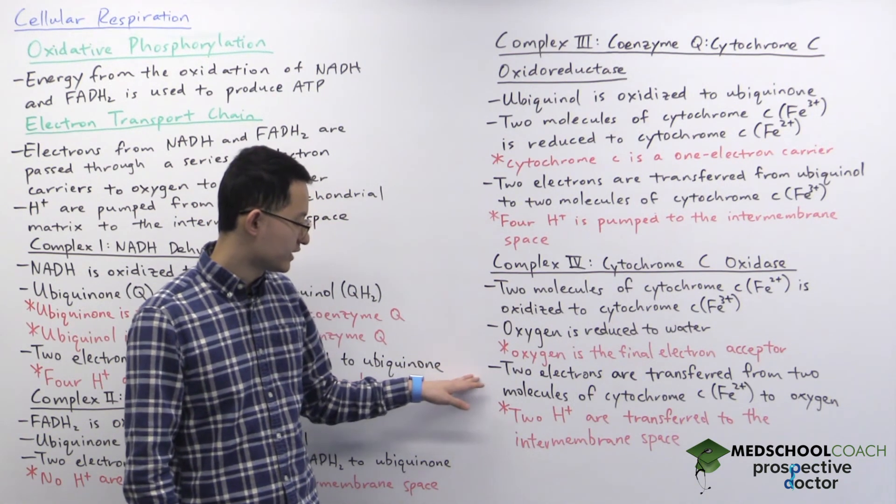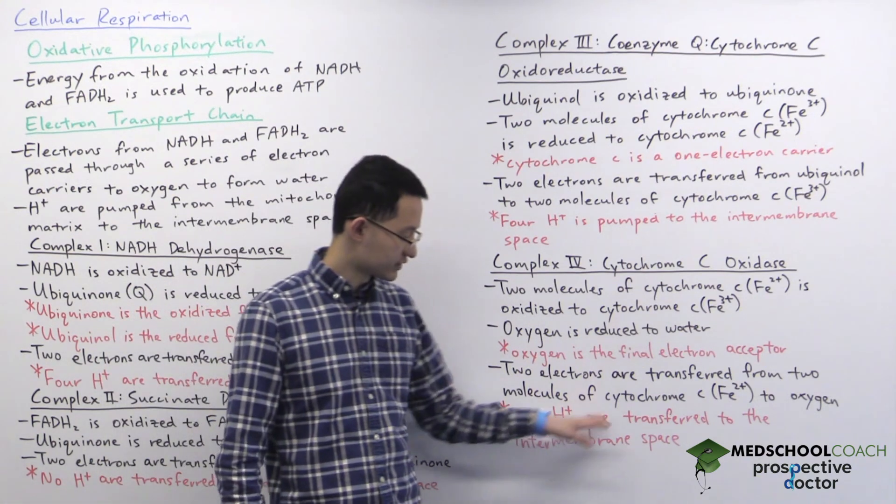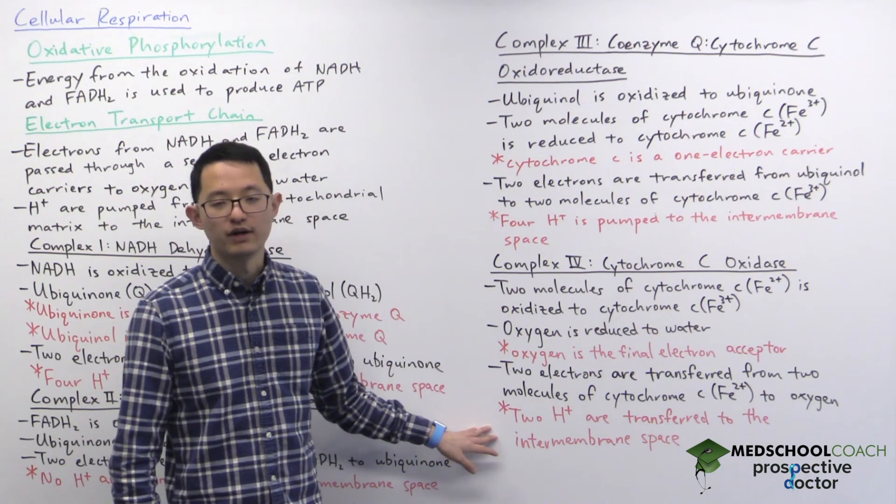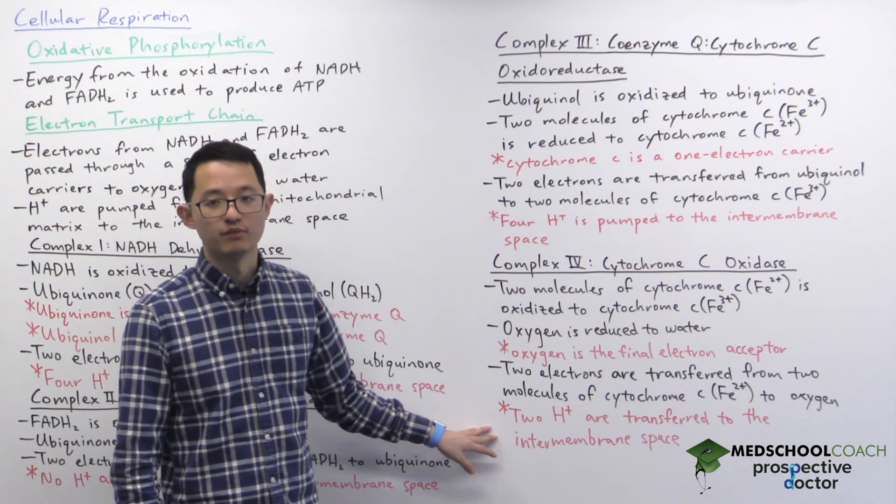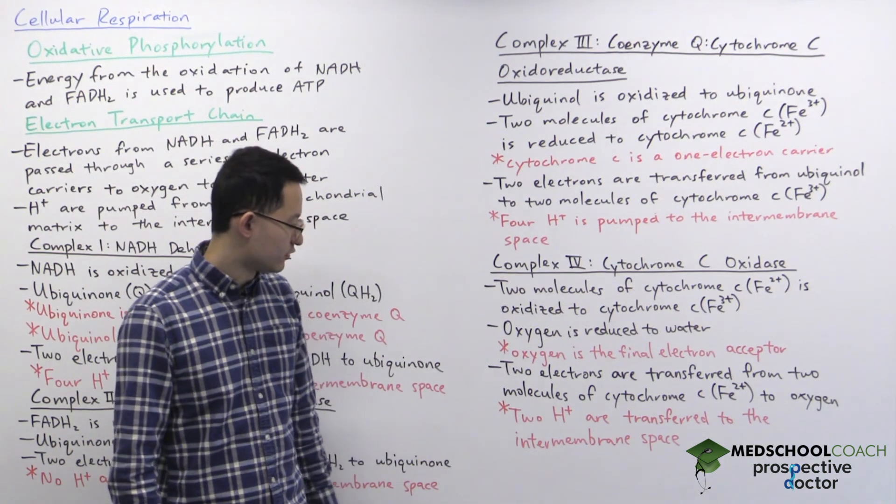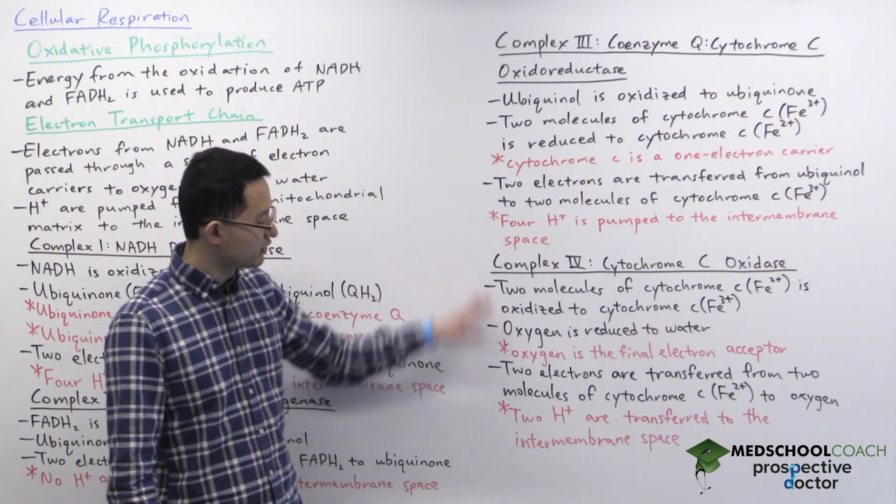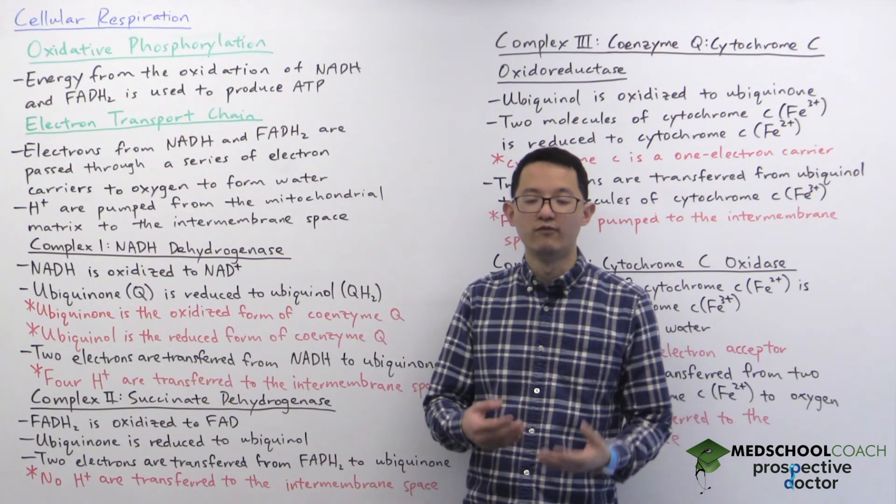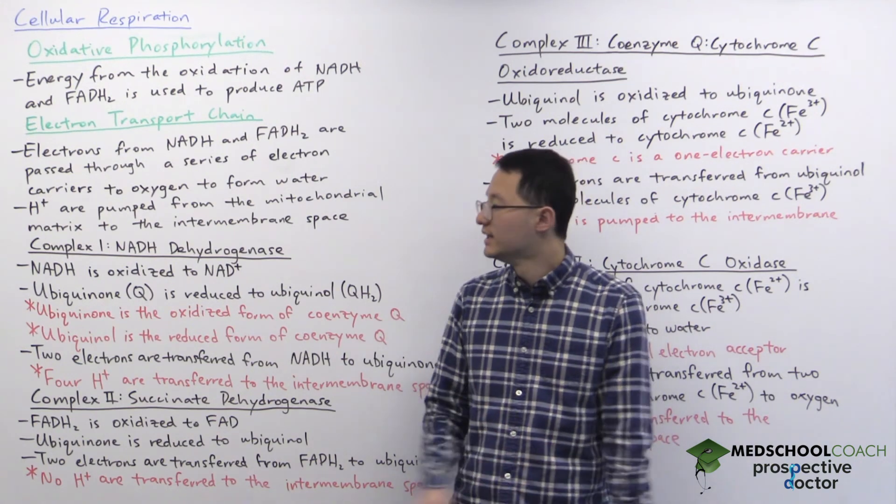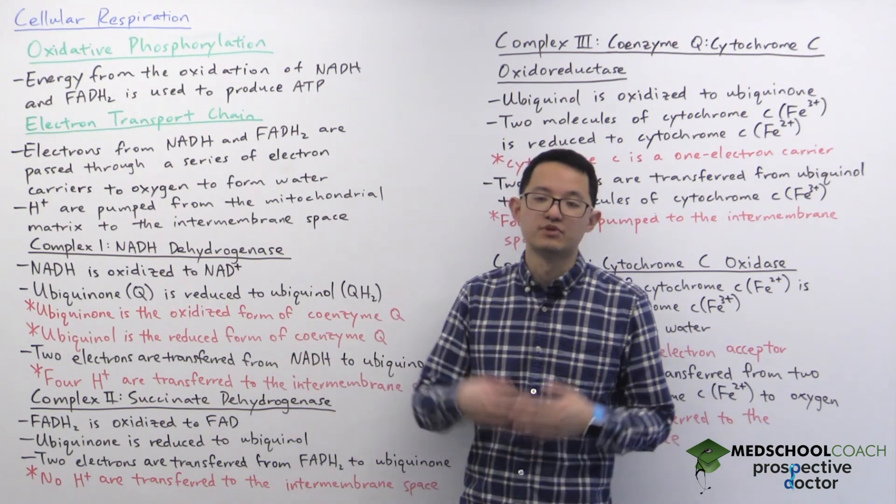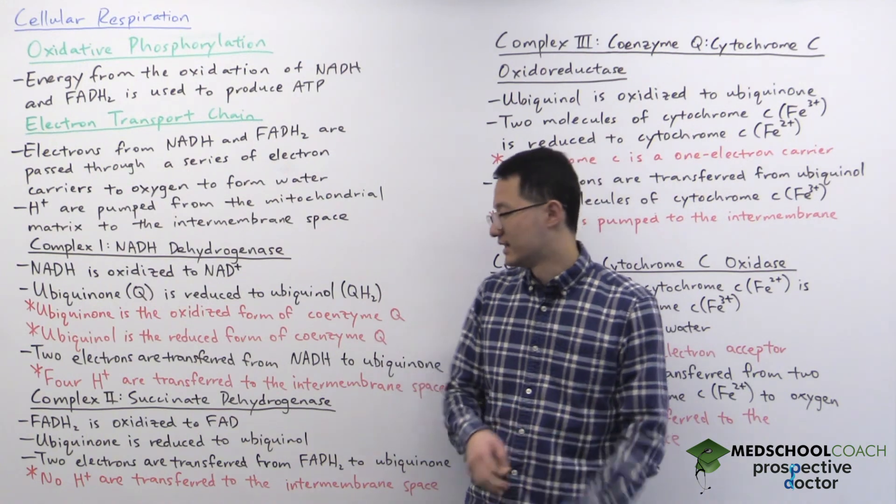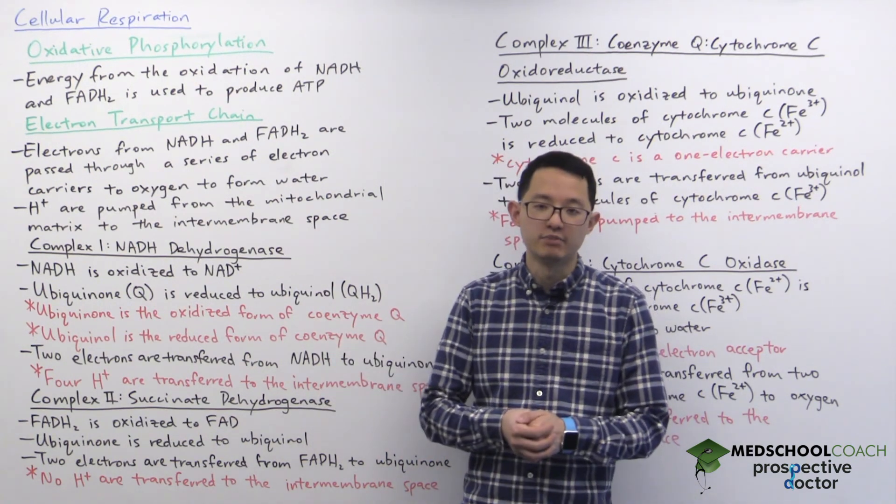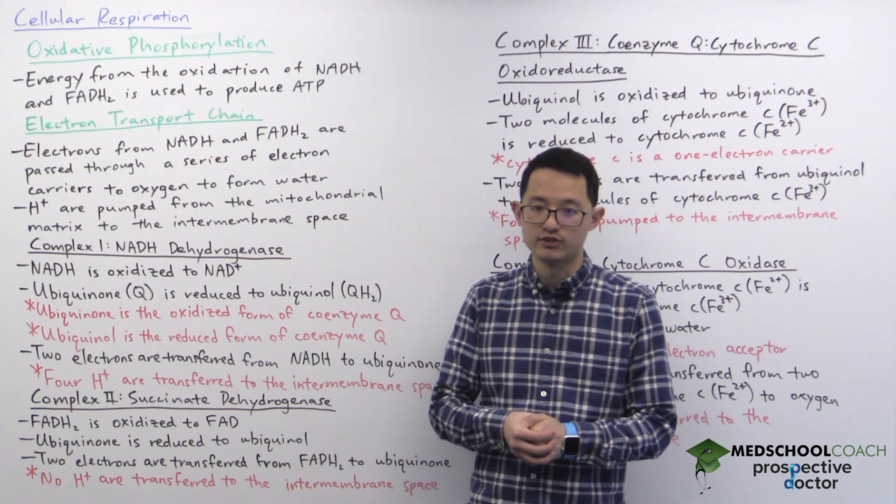So here two electrons are transferred from two molecules of cytochrome C to oxygen, and we also pump a couple protons into the intermembrane space. So because we're still pumping protons from complex 3 and complex 4, that's why FADH2 is still helpful for producing ATP, but it's just that NADH pumps more protons across the inner mitochondrial membrane. So NADH produces more ATP per molecule than FADH2.